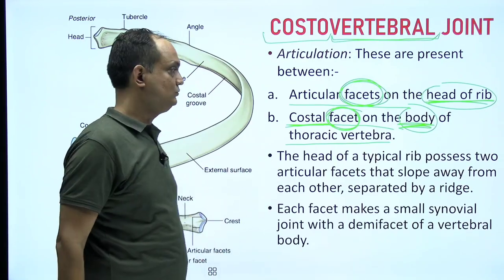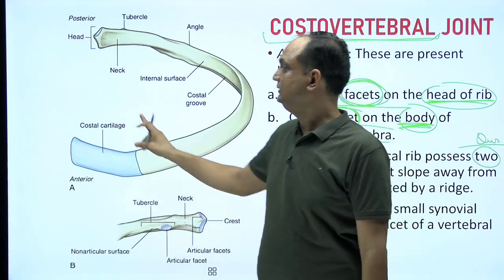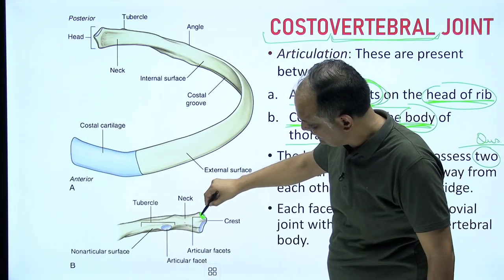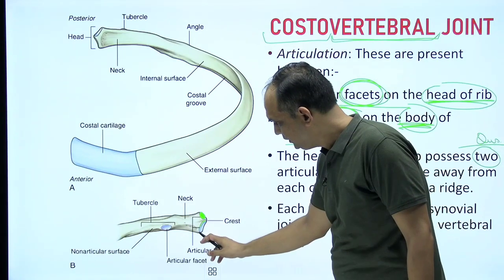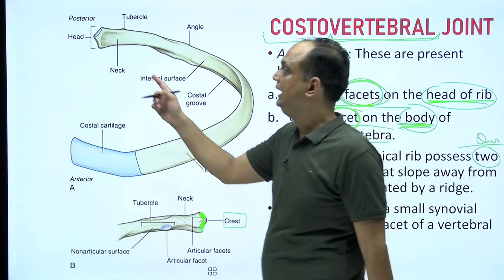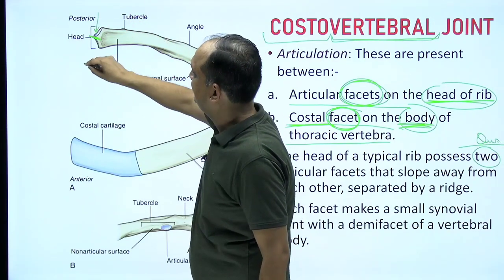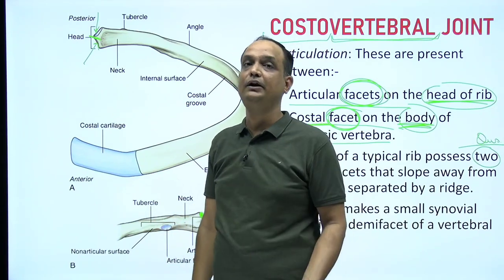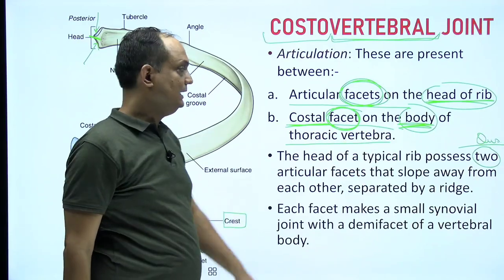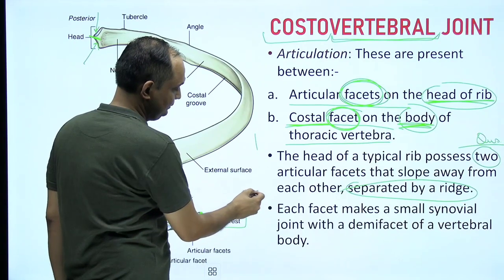The head of a typical rib possesses two articular facets. When you look at the head of a typical rib, you find an upper facet and a lower facet, separated by a projection known as the crest or ridge. These two facets slope away from the ridge — they are not vertical but slope in opposite directions.